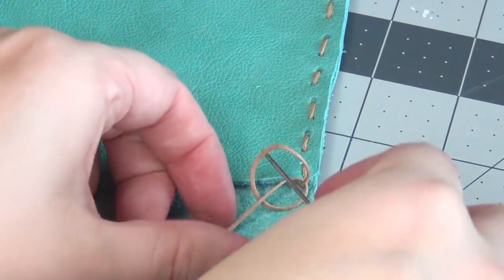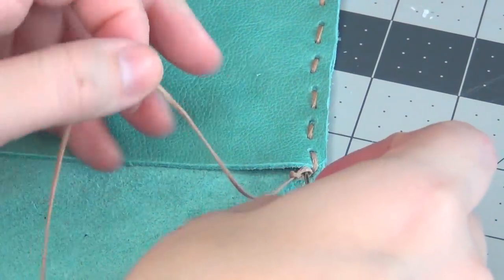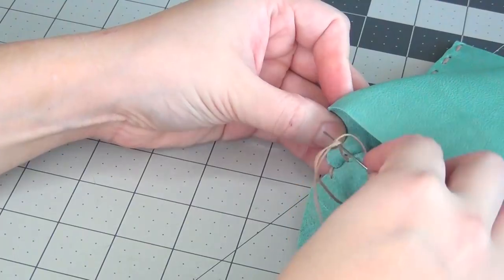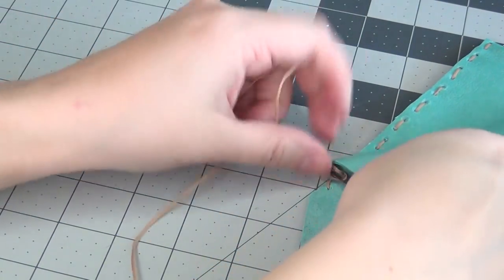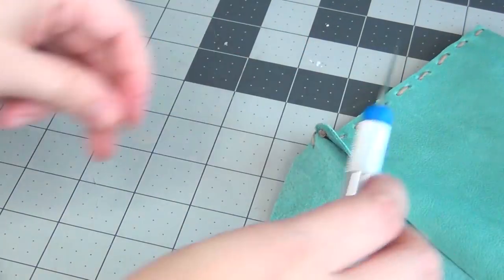And then before you pull it tight, place the needle through the center and pull the knot as close to the inside of the seam as you can before pulling it all the way tight. Then cut off the excess cord with your exacto knife and repeat this exact same process on the other side of your clutch and finish it off the exact same way.